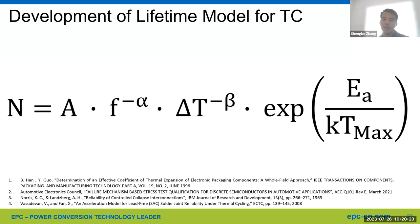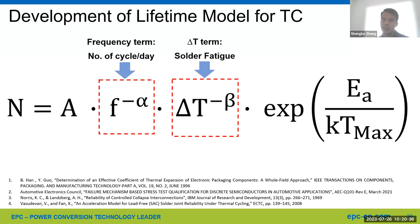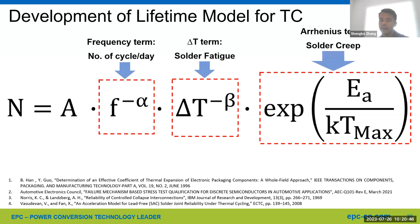In the Norris-Landzberg model, N on the left is the number of cycles to failure, and A is a coefficient. The first term is a frequency term, which includes how many cycles per day during testing. The second term is the delta T term — the classic Coffin-Manson equation — which focuses on the solder joint fatigue wearout mechanism. Lastly is the Arrhenius term, which primarily models solder creep wearout, because solder typically fails faster when the hot extreme temperature T_max is higher.